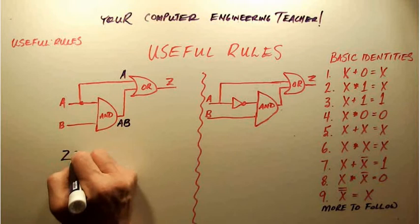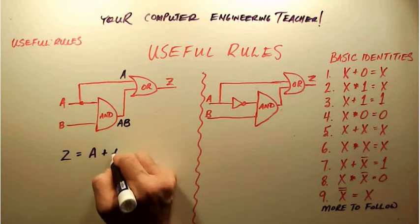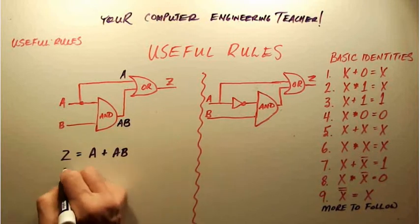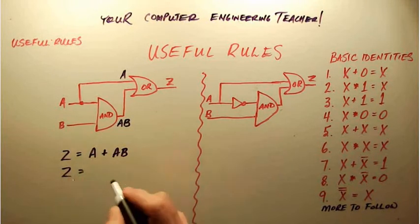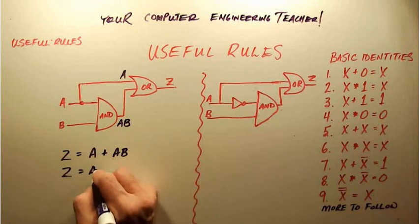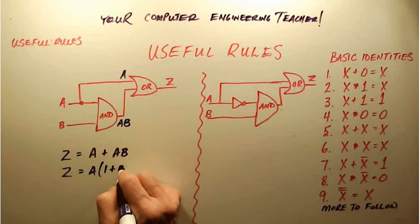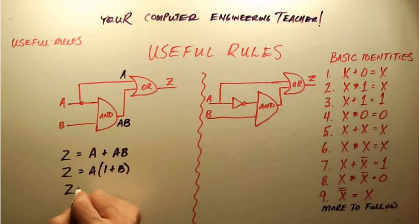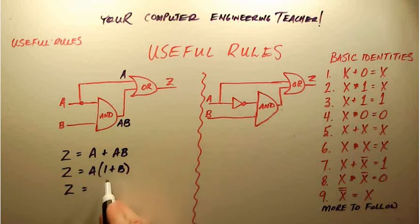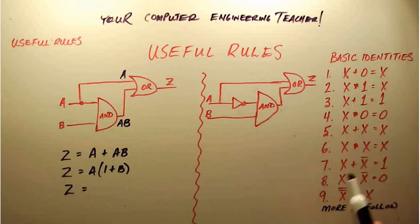So really output Z is equal to A OR'd with AB. I can take out a common factor of A and I'm just left with 1 + B. Then I can look at my identities and recall that 1 + B here is really the same as X + 1. X + 1 is equal to 1, so B + 1 is equal to 1.